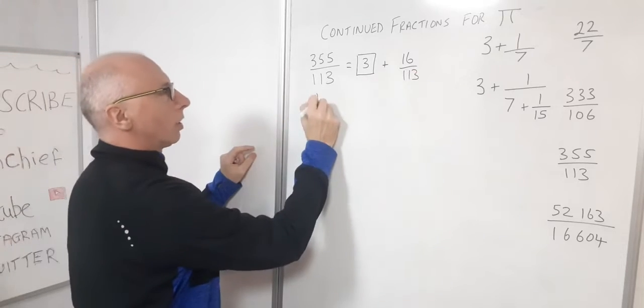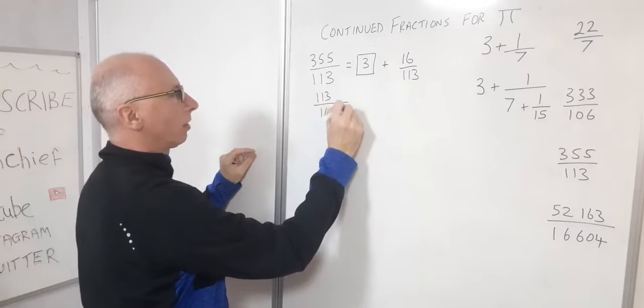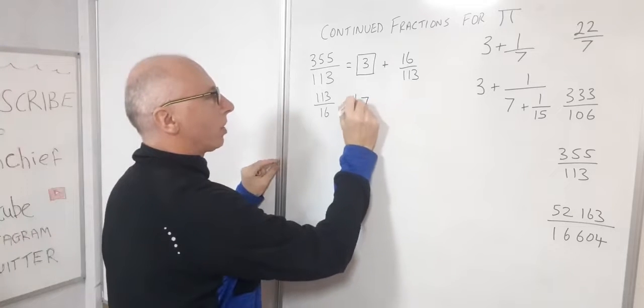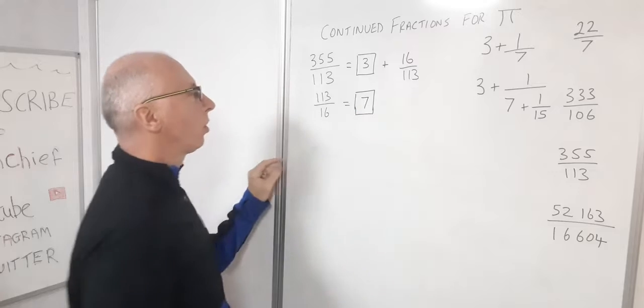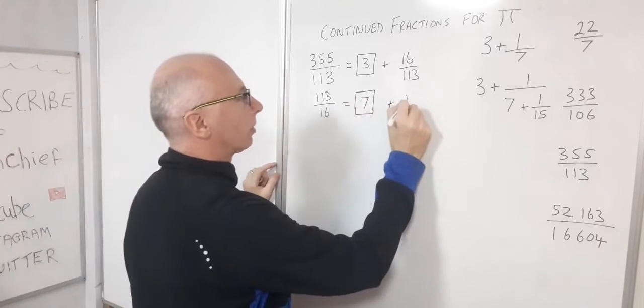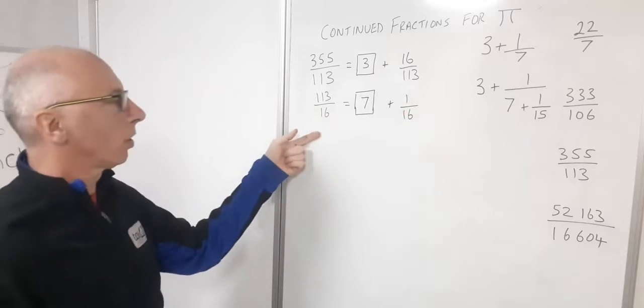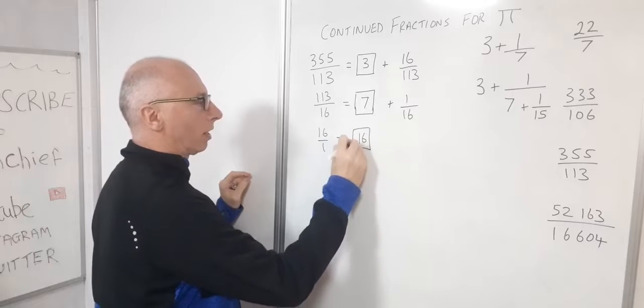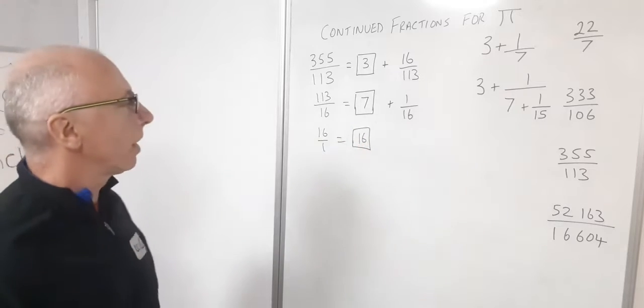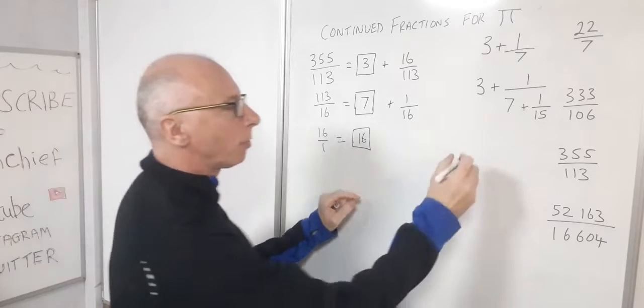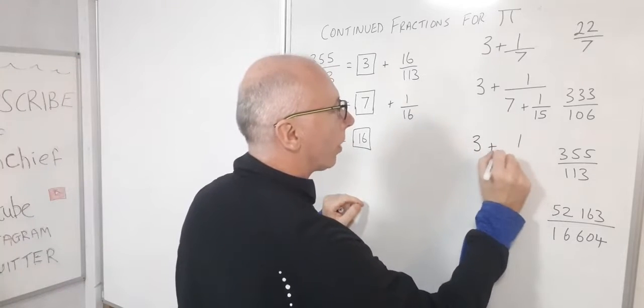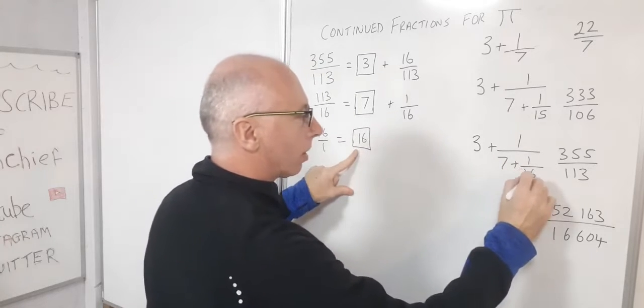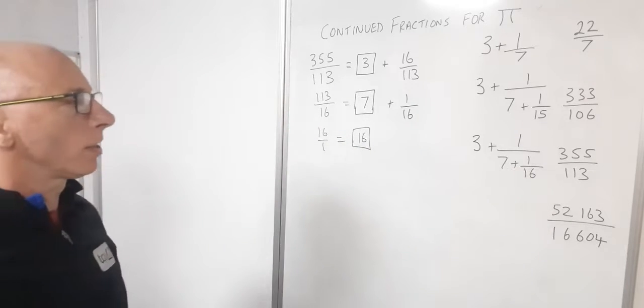Let's bring over this reciprocal, so 113 over 16. So I know 7 times 16 is 112, so that gives me 7 as an integer. Pretty much the same as before, but now I've got 1 over 16 left over. Bring the reciprocal over here, 16 over 1 we know is 16. So now this one we can write in continued fraction format as 3 plus 1 over 7 plus 1 over 16. So that's this one in continued fraction format.